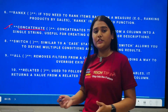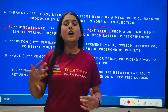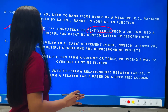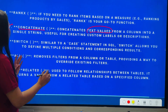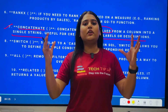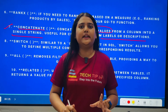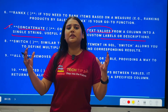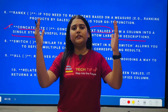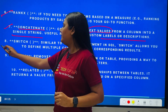The seventh important DAX function is CONCATENATE. CONCATENATE works with text values and concatenates them from columns into a single string — useful for creating custom labels or descriptions. Most DAX functions work with numerical values, but CONCATENATE works with text values, and can sometimes work with numerical values depending on the data type. If you want to combine two columns into one, you use CONCATENATE.